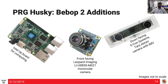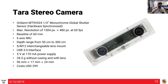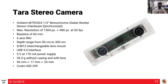The down-facing Tara stereo camera uses OnSemi MT9V024 1/3-inch monochrome global shutter sensors — two of them, hardware synchronized. The baseline between sensor centers is about 60mm. It has a built-in 6-axis IMU, and the effective depth sensing range is about 50 cm to 3 meters — roughly the height at which we fly the quadrotor. It weighs about 28.5 grams without casing and costs about $300.